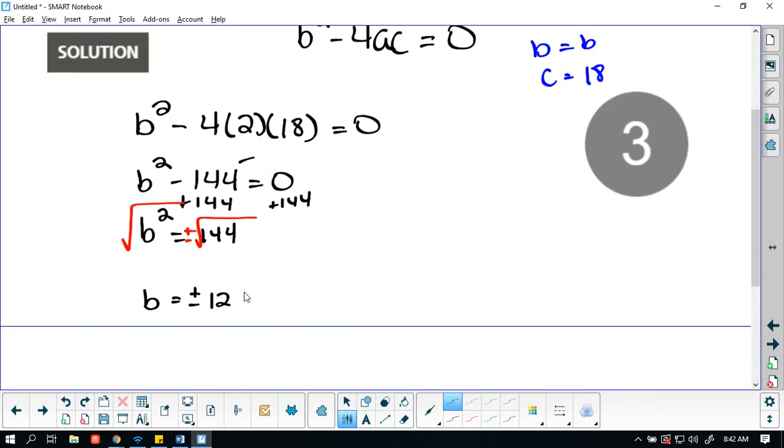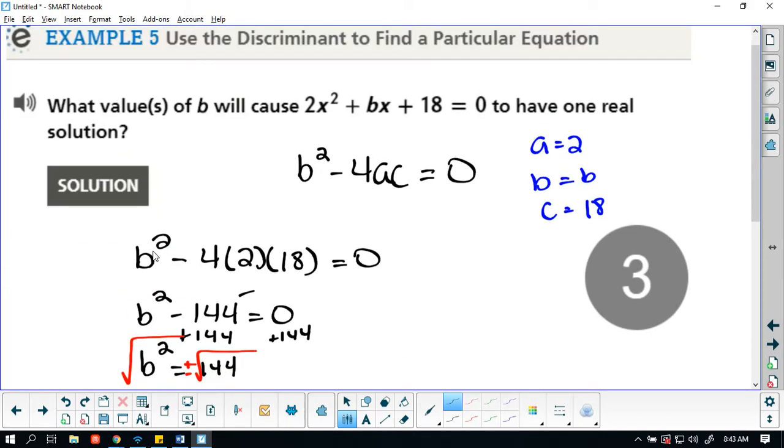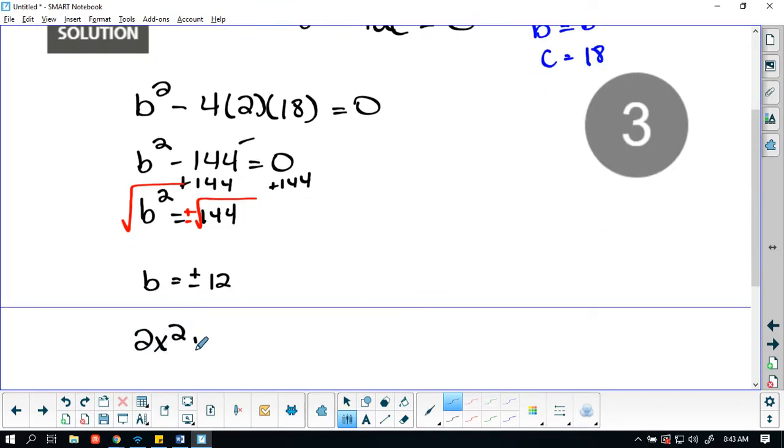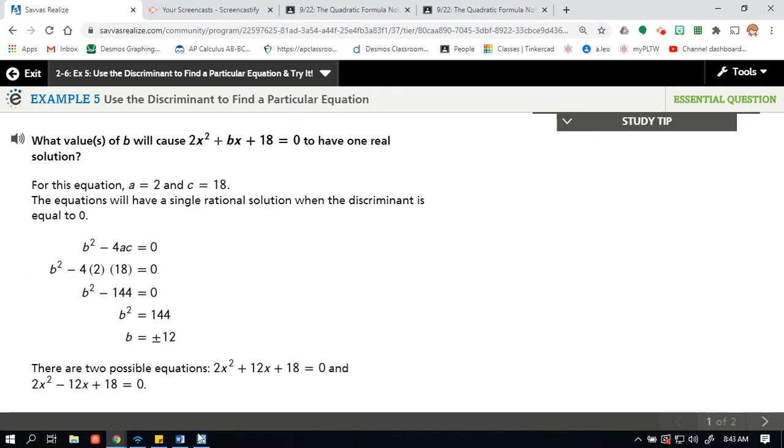So in this case, to get a single root, we have two different equations. One root, we have two different equations. We have 2x squared plus 12x plus 18. And the second equation is going to be 2x squared minus 12x plus 18. So these are our two equations that will give us a real root of 1. And if we click solutions, they did the same thing. It's pretty quick. We could find these values pretty quickly.